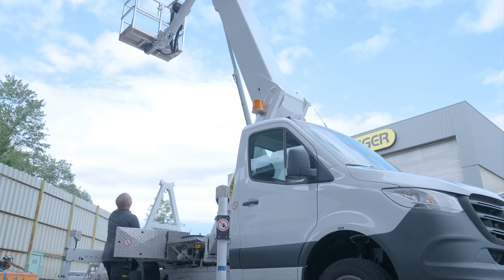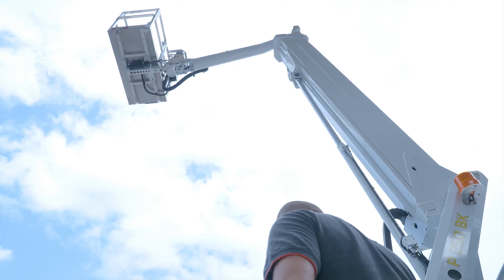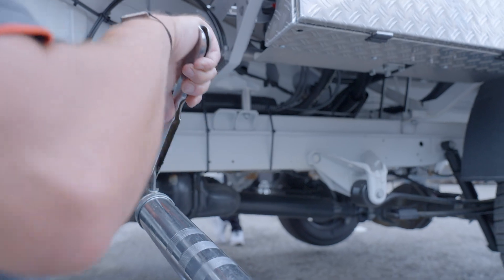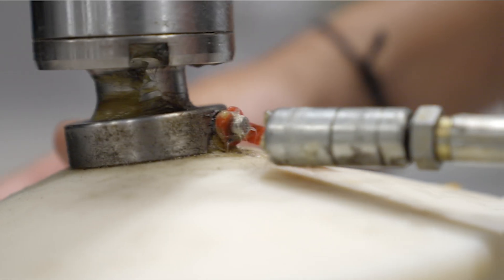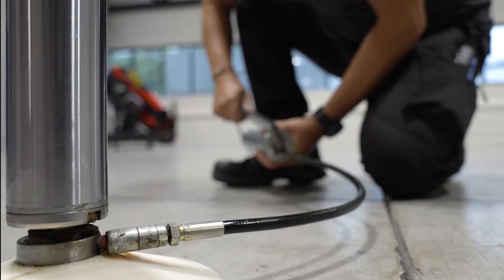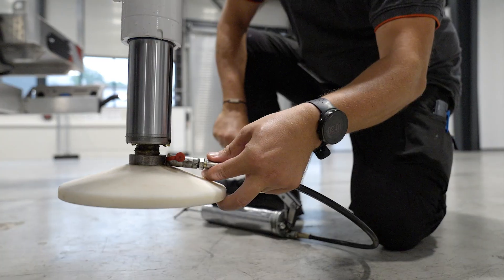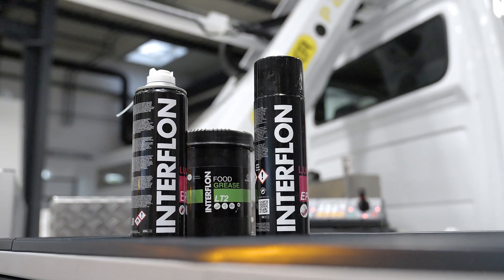To lubricate the slewing gear correctly, the lift boom must be fully raised. Lubricant must be applied to all lubrication points while slewing at the same time. Regrease the ball joints of the stabilizers with suitable grease. All materials required for lubrication can be purchased from any Palfinger service partner.